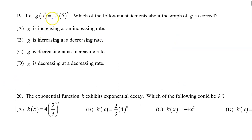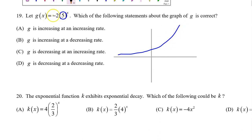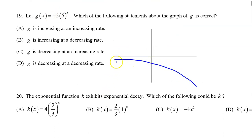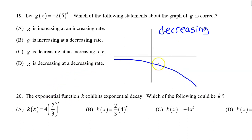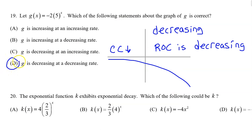Number nineteen: let g of x equal negative 2 times 5 to the x power. Because the b value is greater than one, g of x would be an exponential growth curve. However, because the a value is negative, the curve is reflected over the x-axis. We can plainly see that g of x is decreasing from left to right and is concave down. If a function is concave down, its rate of change is decreasing. So the answer is D: g is decreasing at a decreasing rate of change.